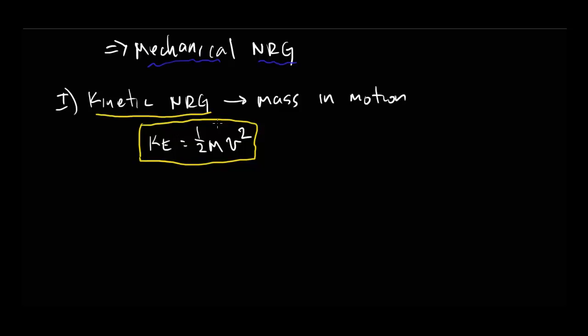So kinetic energy: you've got an object with mass M moving at speed V, you plug in the numbers, and you get a certain number of joules — a certain amount of energy in joules. That's pretty obviously mechanical energy — it's a moving mass.